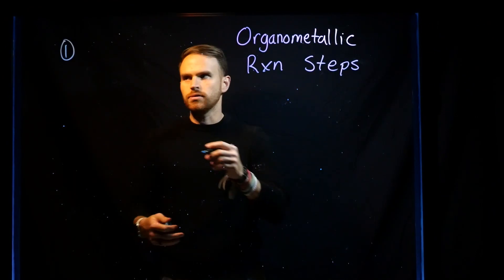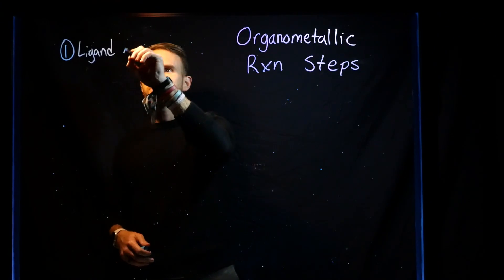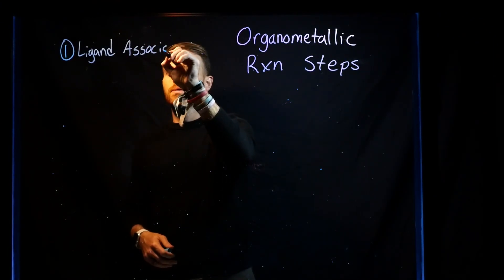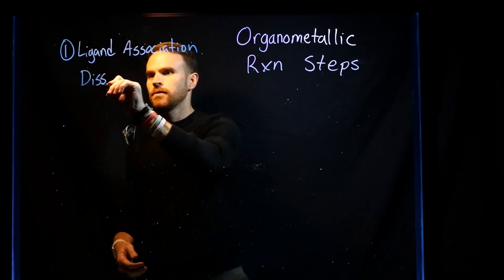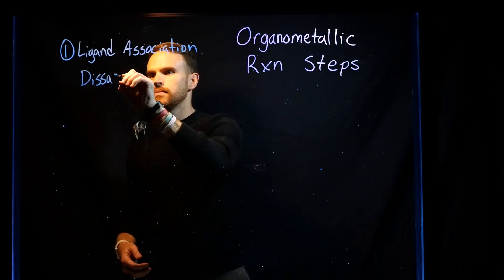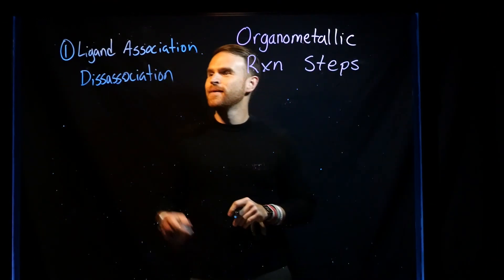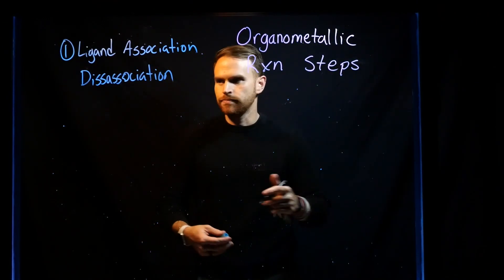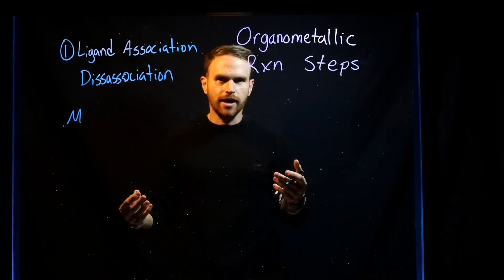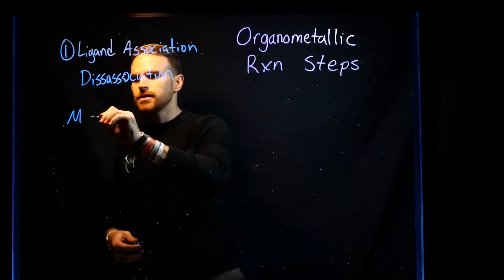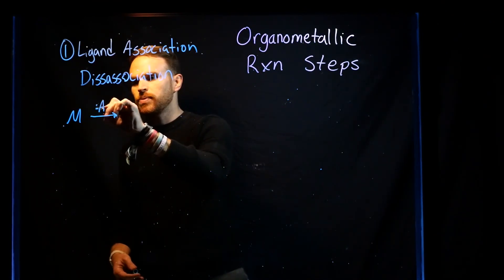The first, and most straightforward example, is ligand association, and the reverse of that is dissociation — ligand association and ligand dissociation. Essentially, you have some metal, which is always going to be the case for organometallic chemistry, and a ligand is coming on. I will just use A to depict that.